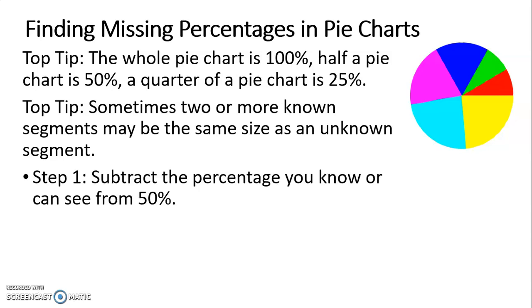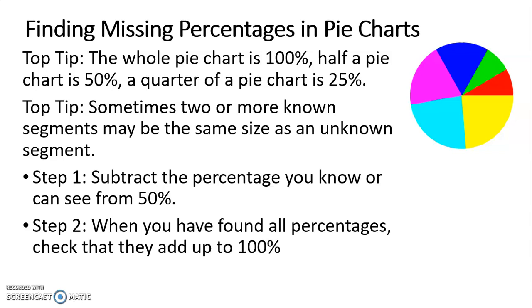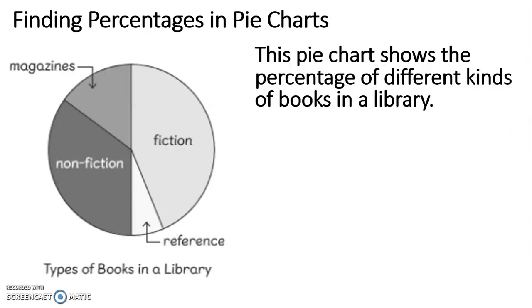Step 1: in this lesson we're going to be using this quite a lot — subtracting the percentage we know from 50%. And step 2: when we've found all the percentages, we should just check that they all add up to 100%. Let's have a look at the first pie chart.